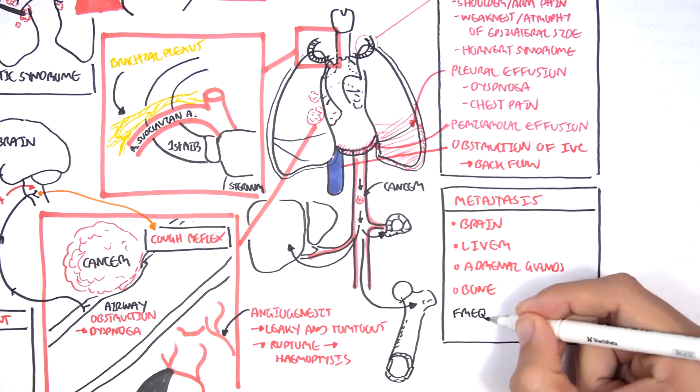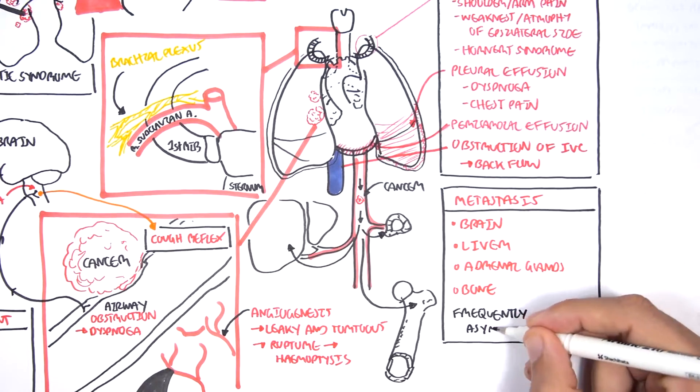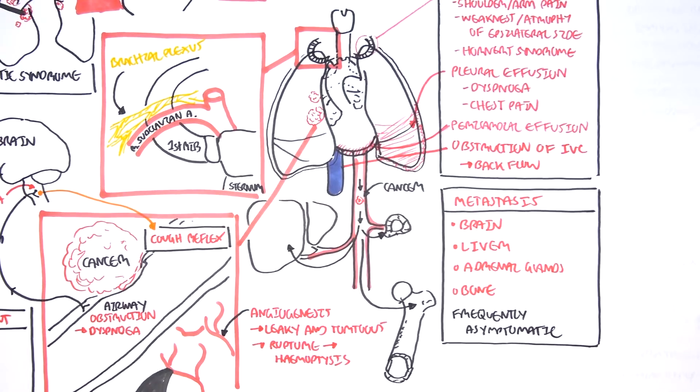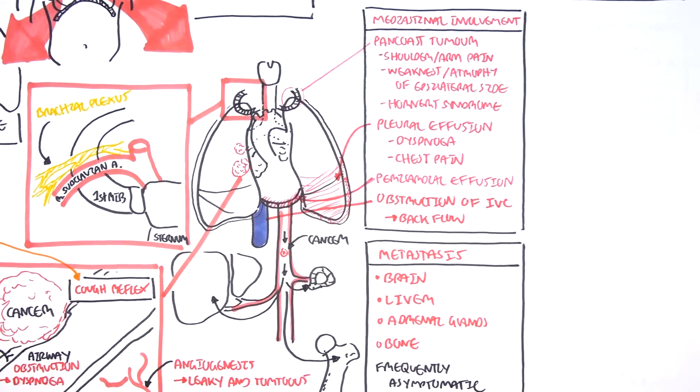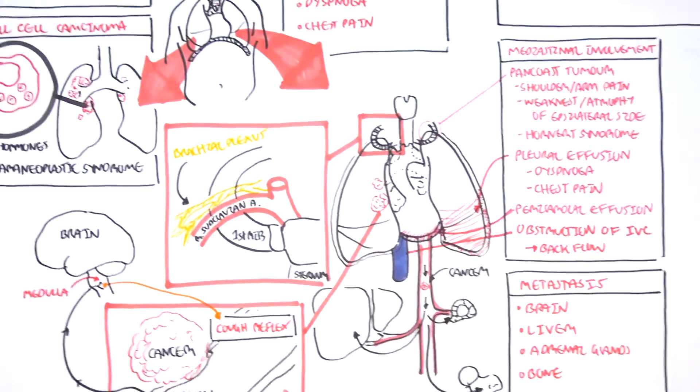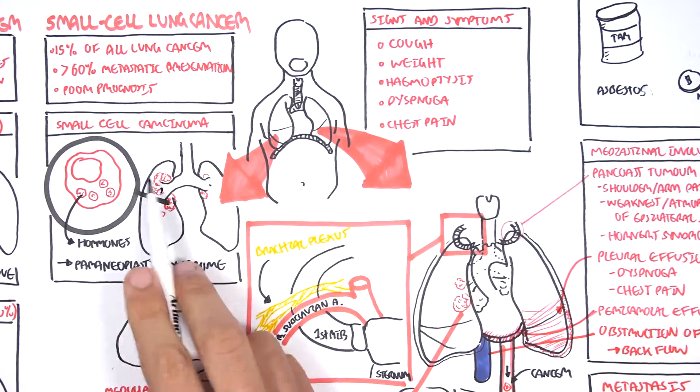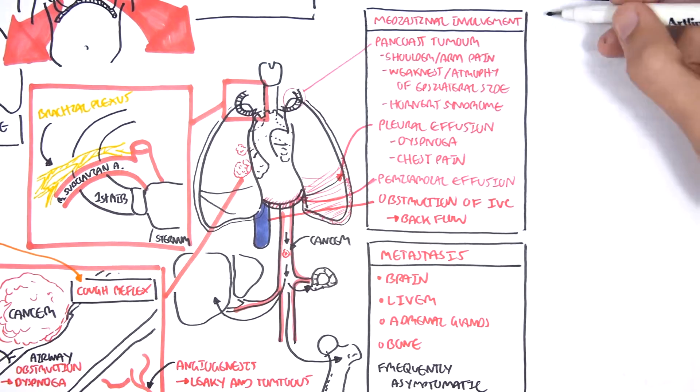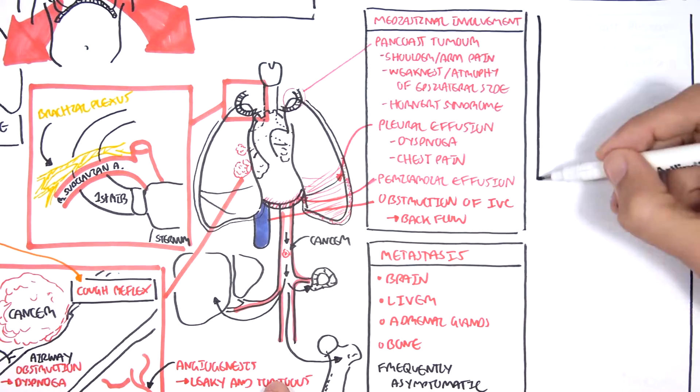Metastatic sites are commonly asymptomatic. Now, looking back to the different types of lung cancer, remember the neuroendocrine cells that begin secreting hormones in the small cell carcinoma? Well, it leads to the phenomenon called the paraneoplastic syndrome.